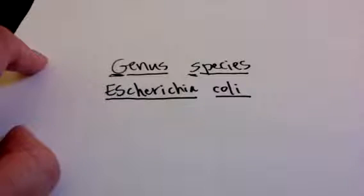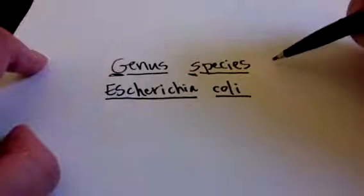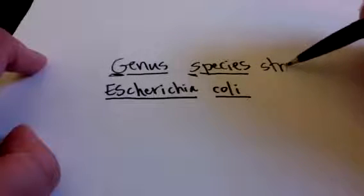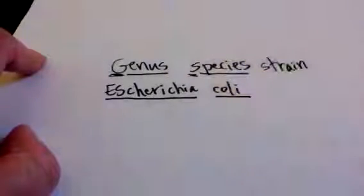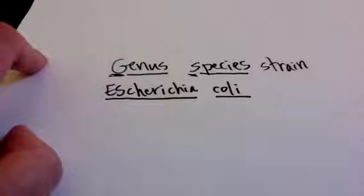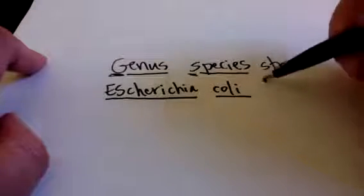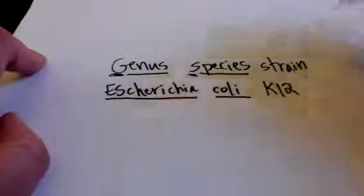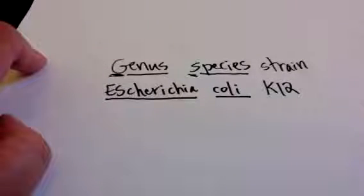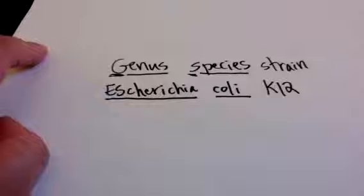Now, with bacteria, we sometimes have another designation after the species, and that would be the strain of that bacteria. For example, for Escherichia coli, you may have heard of E. coli K12, or Escherichia coli K12. K12 is the strain of the Escherichia.